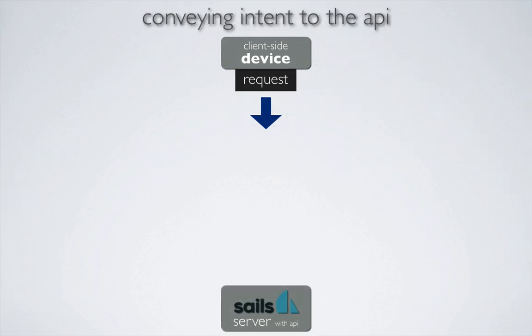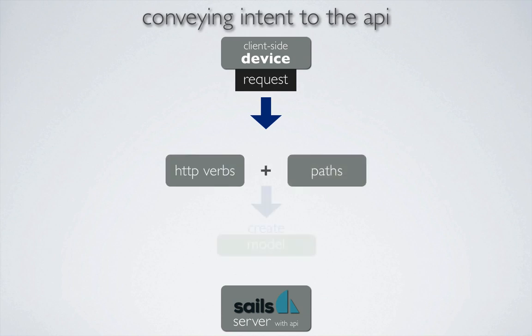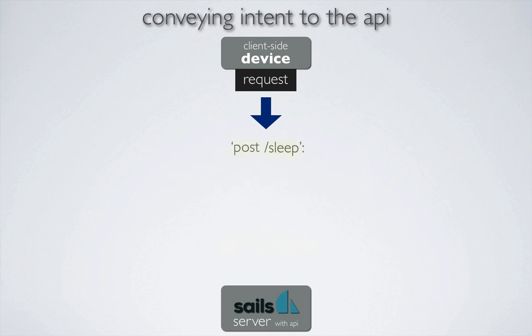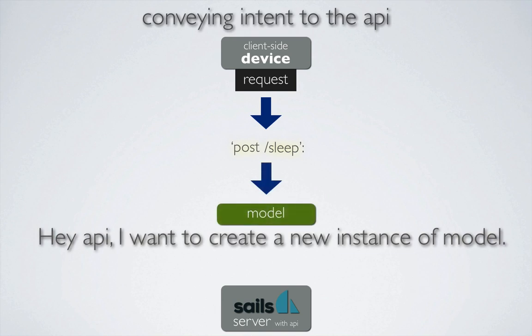The important takeaway here is that we can now combine HTTP verbs and paths to convey our intent to the API. By using POST /sleep, the API knows to create a new instance of sleep. And by passing it parameters, the API knows that we want to use those parameters as part of the sleep instance. How the API interprets this is the subject of the next section.